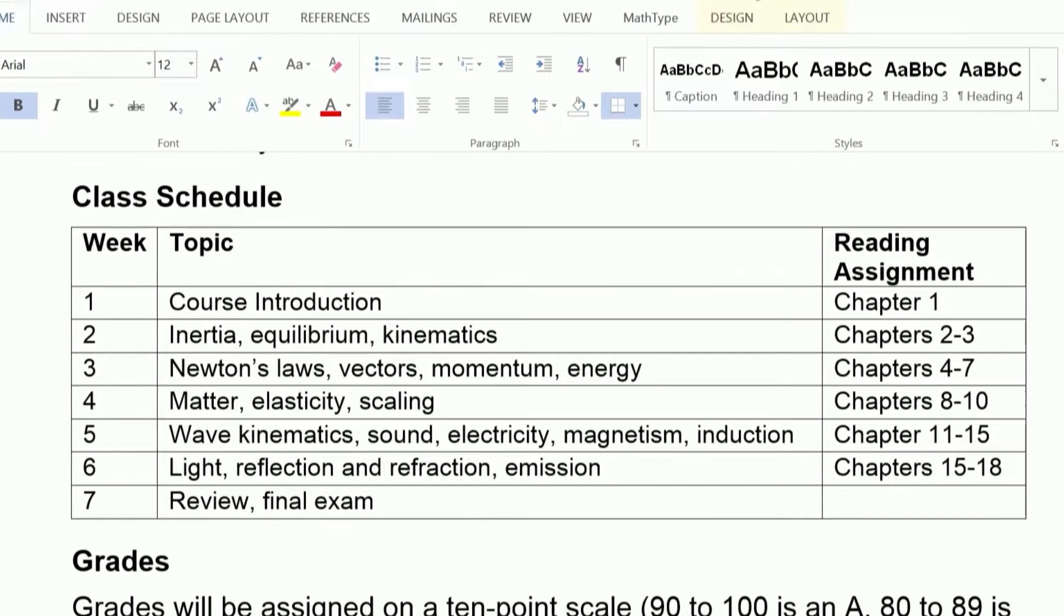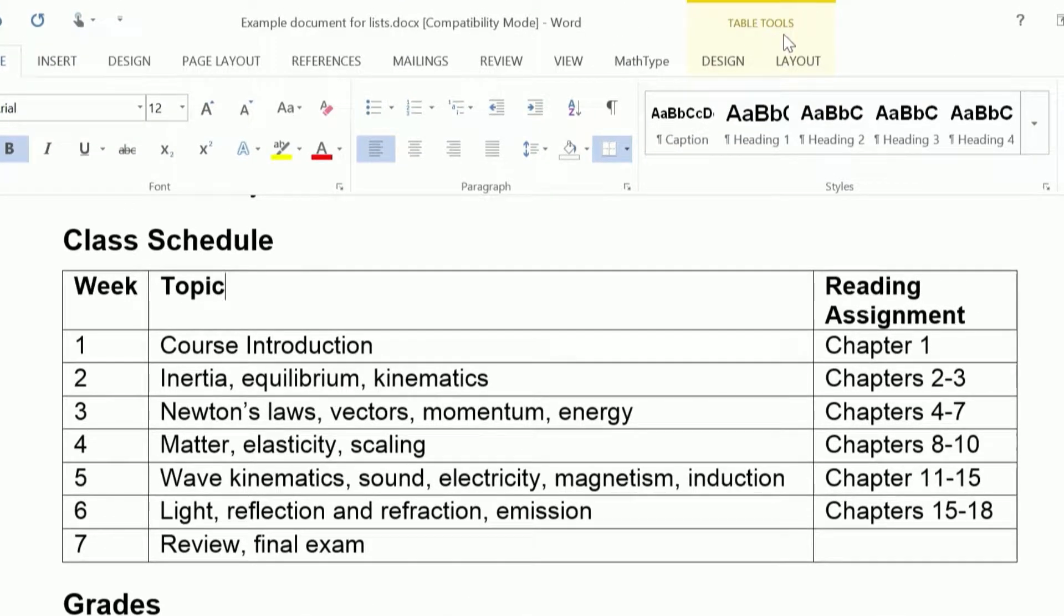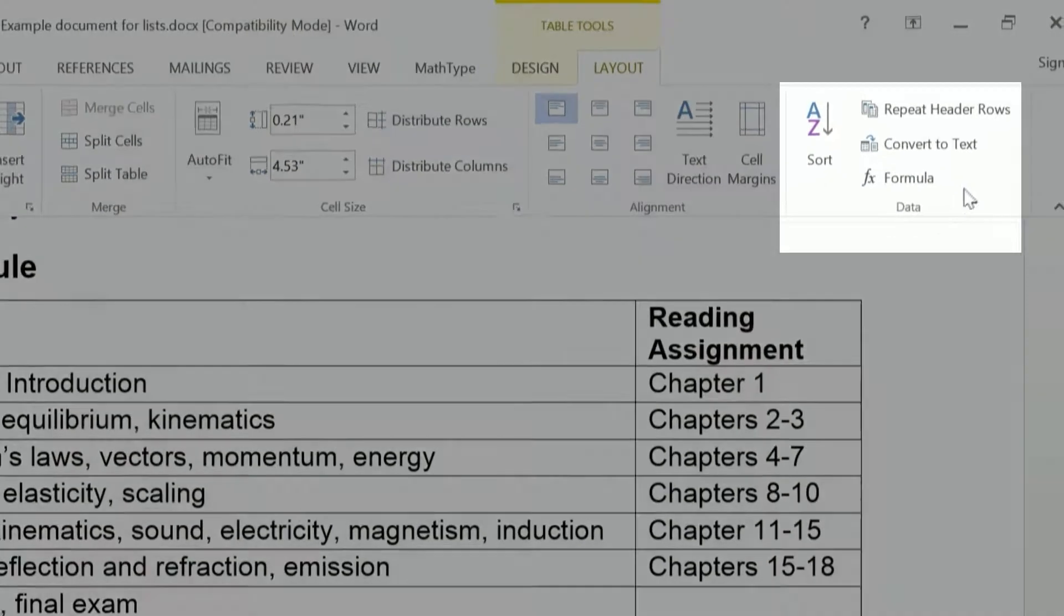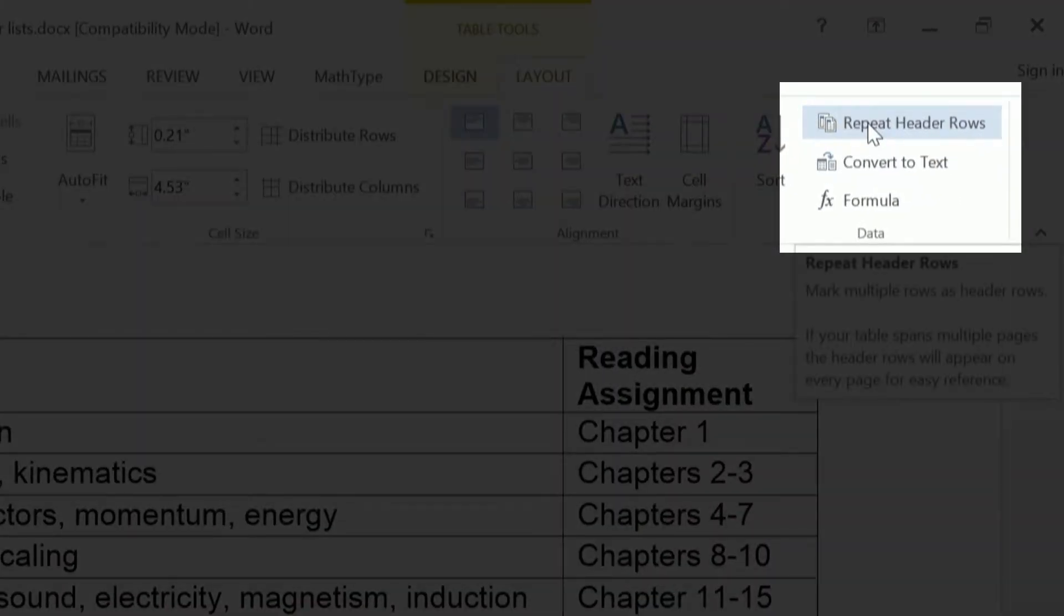Look for the table tools section that's been added in the menu row, and then click on the layout tab under table tools. That presents a data group, and you want to select repeat header rows.